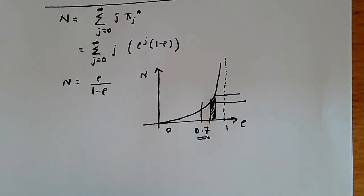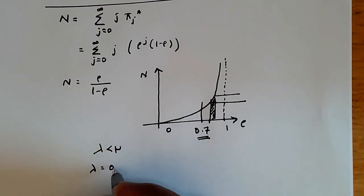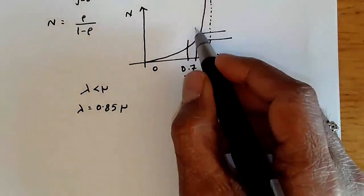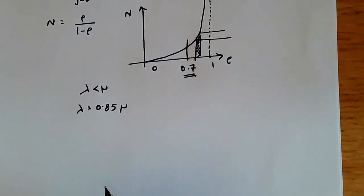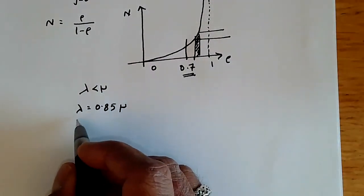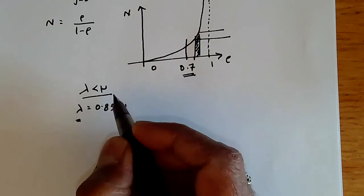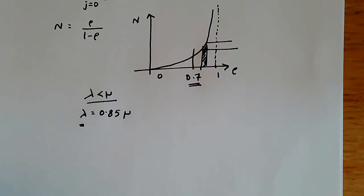Now, we want to understand why do we have this behavior? Why is it that even when lambda is less than mu, so let's say lambda equals 0.85 mu, so it's 85%, why is it that we still have the delay going up or the number of customers in the queue going up so fast? What's really going on is that it kind of intuitively doesn't make sense because we actually have the arrival rate less than the service rate. Lambda is less than mu, strictly less than mu, yet we have this.